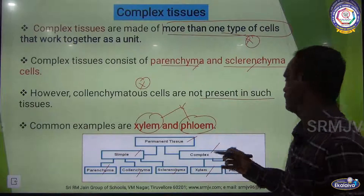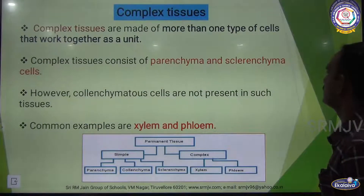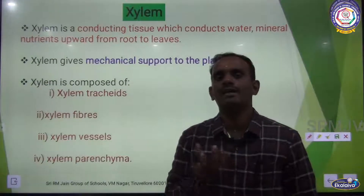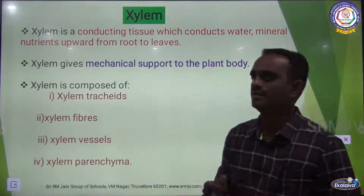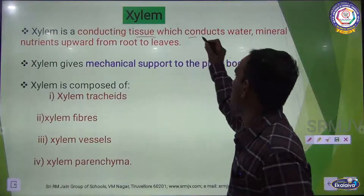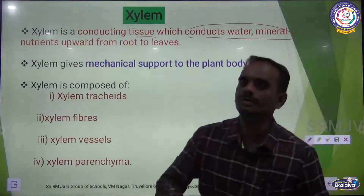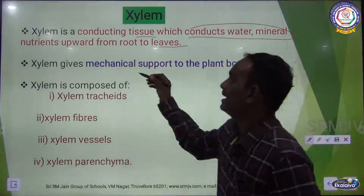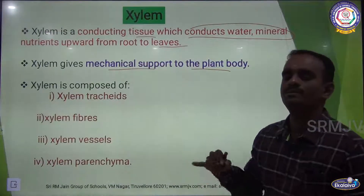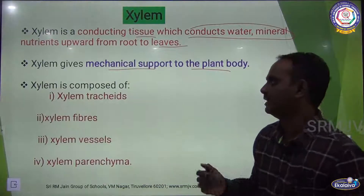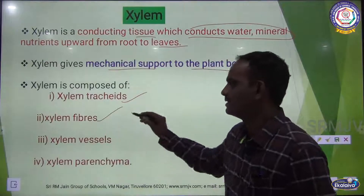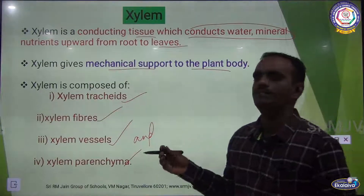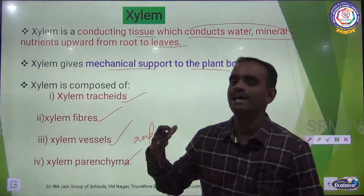Now we are seeing xylem. Xylem is a conducting tissue — it conducts water and minerals from the soil upward to all parts of the plant body, including the leaves. Xylem also gives mechanical support to the plant body. Xylem tissue is composed of four main components: xylem tracheids, xylem fibers, xylem vessels, and xylem parenchyma.